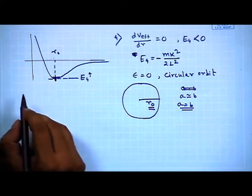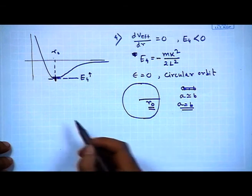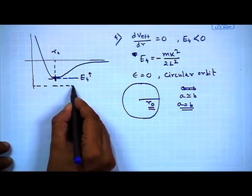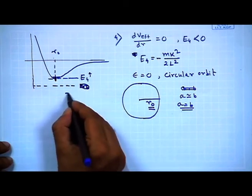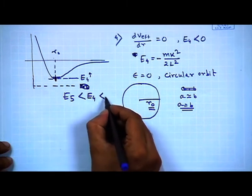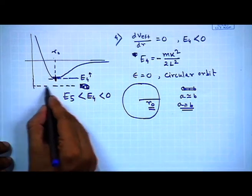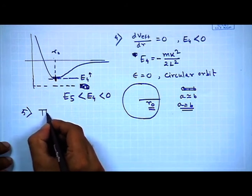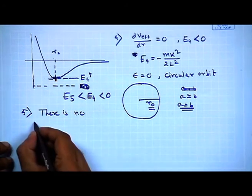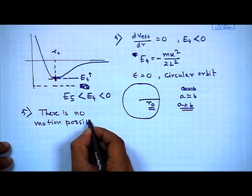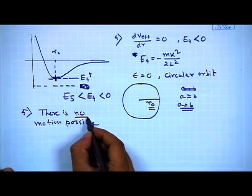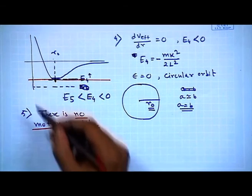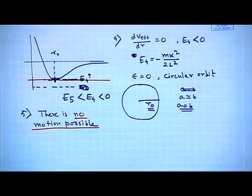There is also Case 5: energy E₅ less than E₄, which is the minimum of the potential well. If the particle's energy is below E₄, there is no motion possible. E₄ is the lowest energy level at which a particle can move in this particular force field; below this energy no motion is possible.